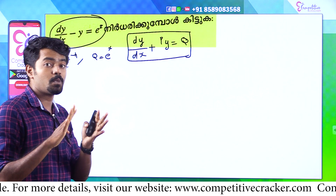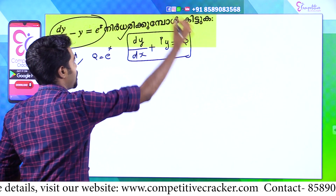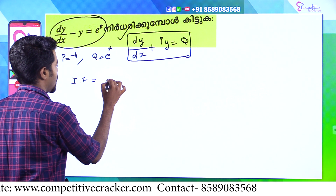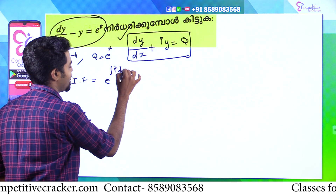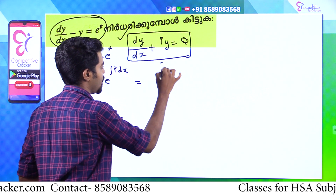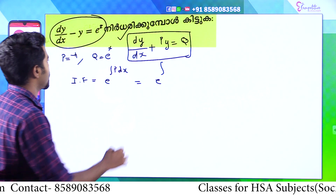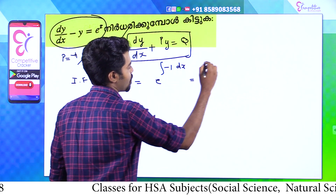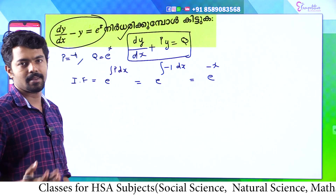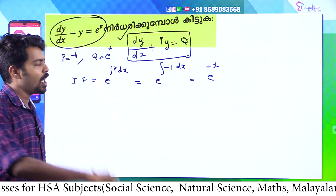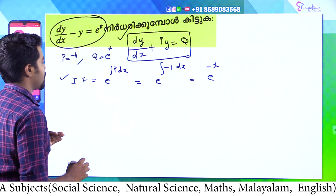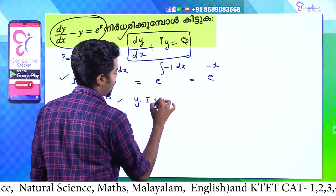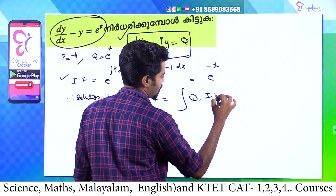We will learn a few steps. First step: the integrating factor IF is equal to e raised to the integral of p dx. Second step: that is e raised to the integral of p, and what is the value of p? Minus 1 dx, that is equal to e raised to minus x. That is the integrating factor.